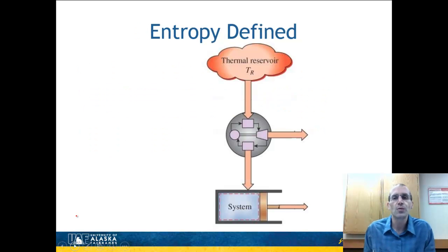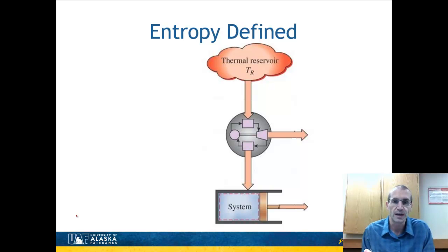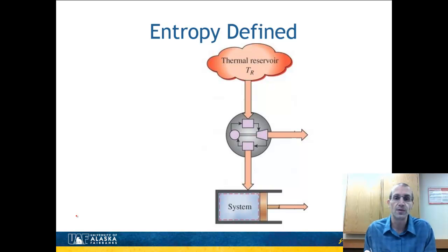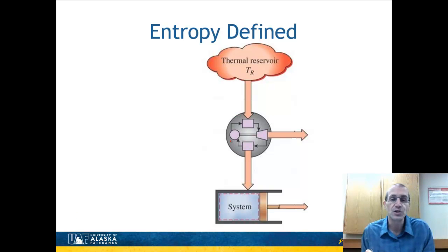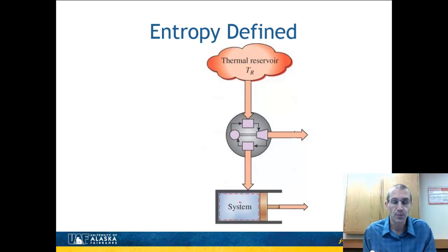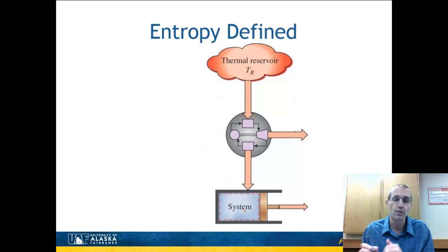First, I want to go through the definition of entropy, following very closely the classic definition from the textbook. I'll describe the system: what I have is a reversible heat engine in the middle, attached to a system — this might be, for example, a piston-cylinder system. I'm not going to make any stipulations about the system being reversible or irreversible or steady-state at this point.